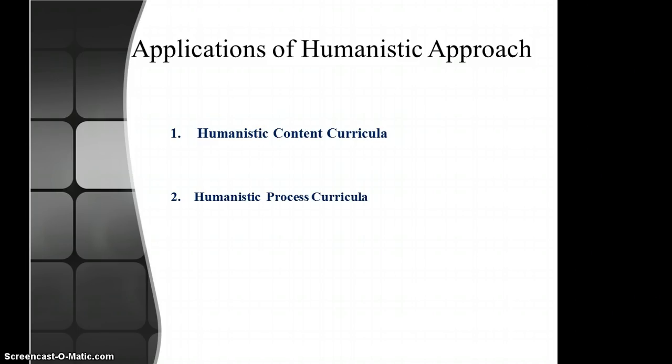The second classification is humanistic process curricula, with the focus on the whole student, including teaching assertiveness training and life skills. The third is school group structures, where the whole timetable and school environment are restructured to facilitate humanistic teaching or just individual classes.